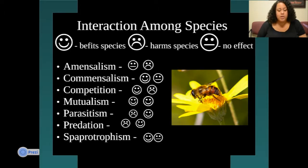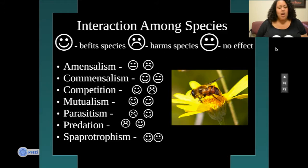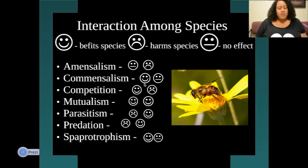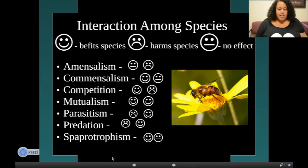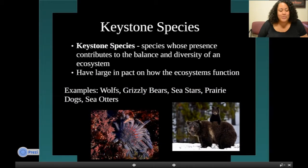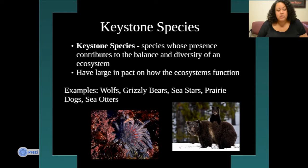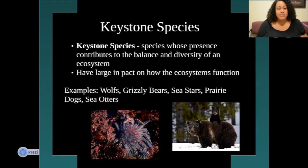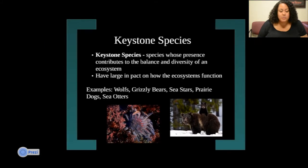Interaction among species is very important. A smiley face means it benefits one species, a sad face means it harms another species, and a straight face means there's no effect. So amensalism means there's no effect on one species but it harms another. Keystone species are species whose presence contributes to the balance and diversity of an ecosystem. The loss of that species would have a large impact on the ecosystem and affect all other aspects of it. Great examples are wolves, grizzly bears, sea stars, prairie dogs, and sea otters.